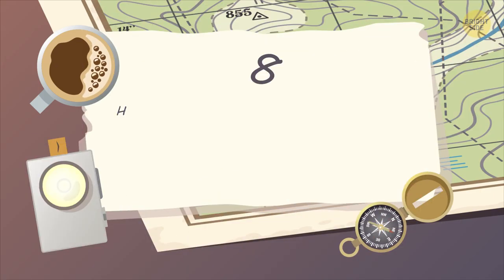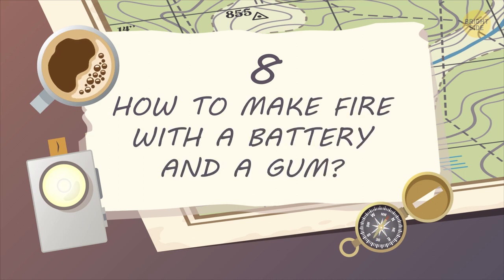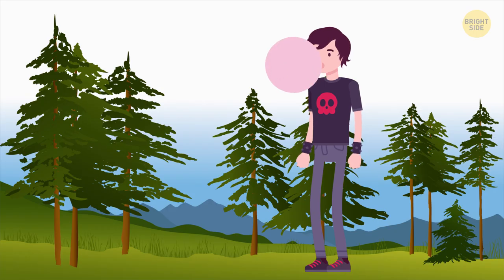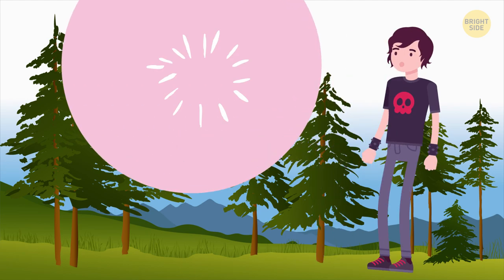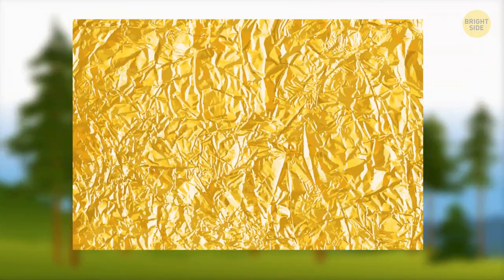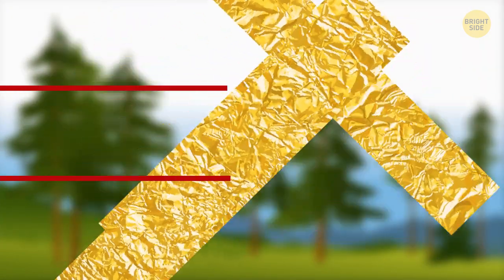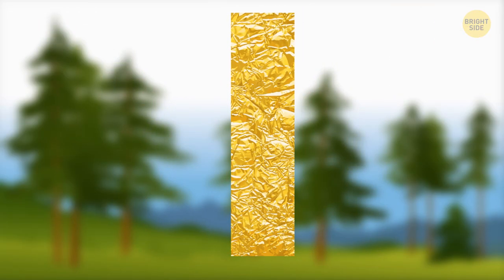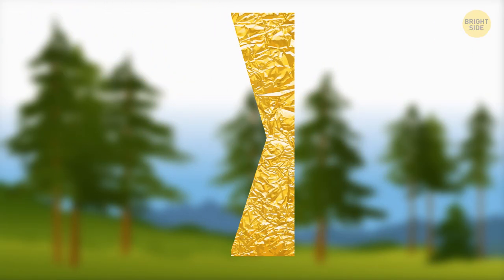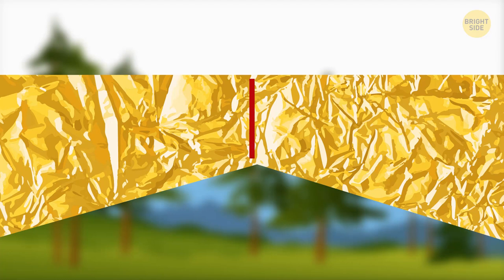8. How to make fire with a battery and a gum. Well, not the gum itself, but its tinfoil wrapper. First cut it lengthwise into 3 parts. Then cut each of them in a bowtie shape with the center about 1 16th of an inch wide. Before proceeding, put on gloves.